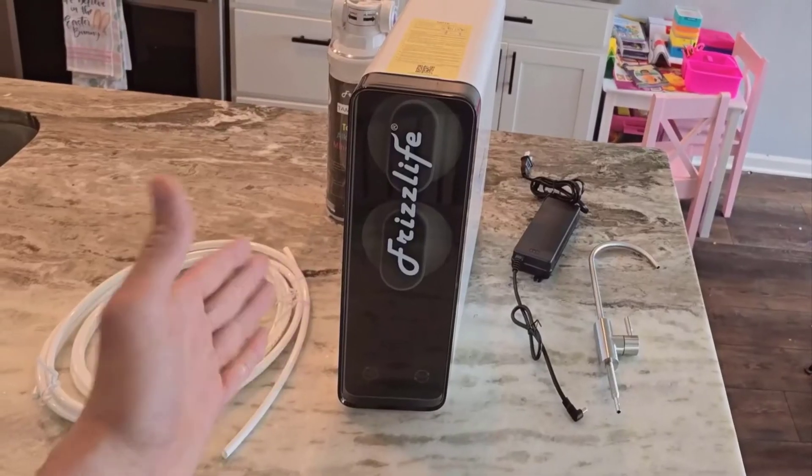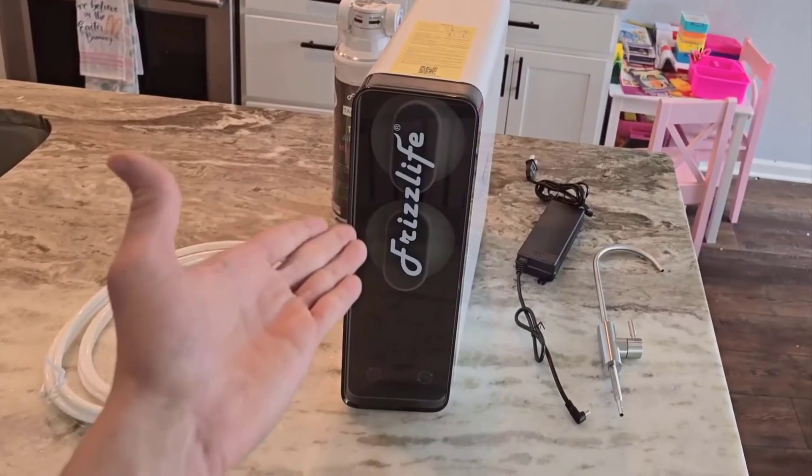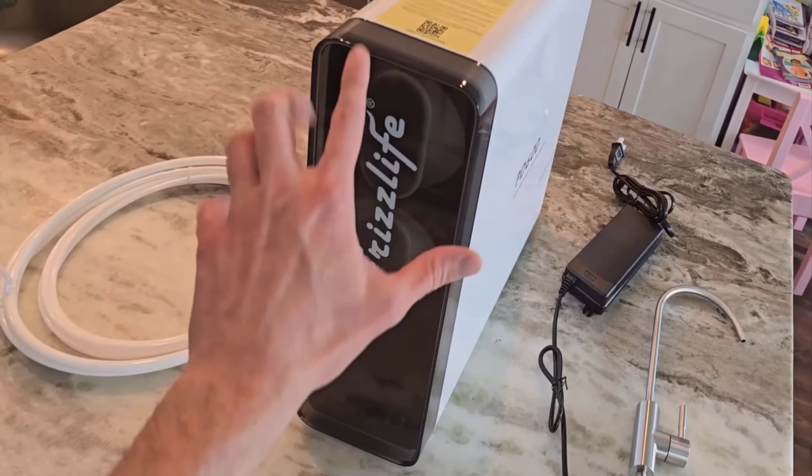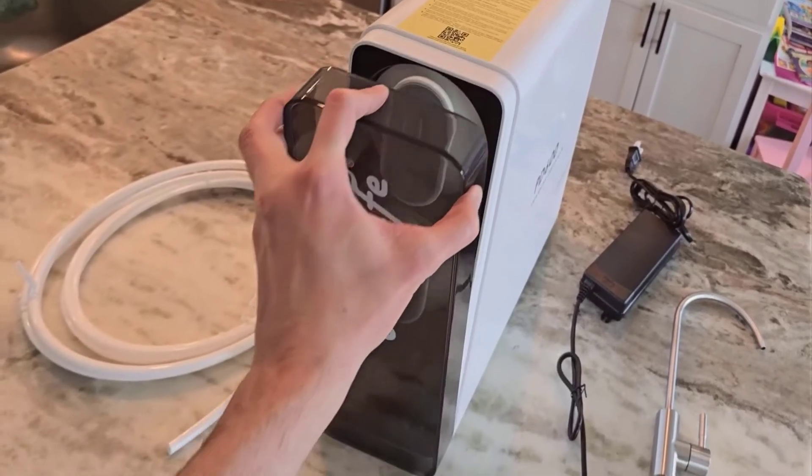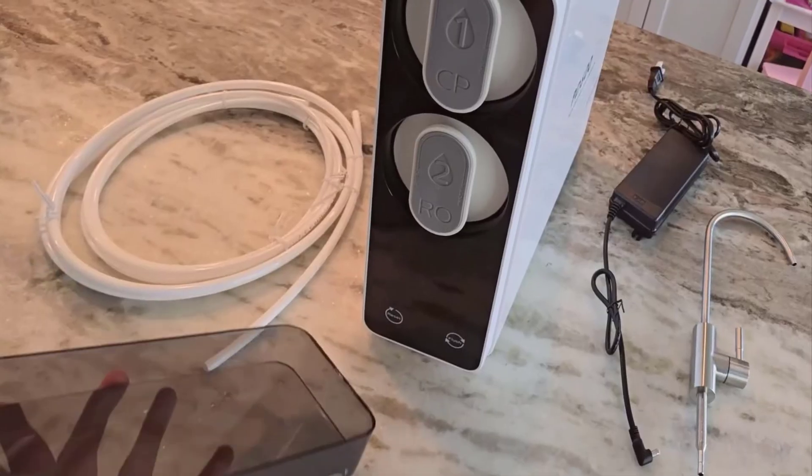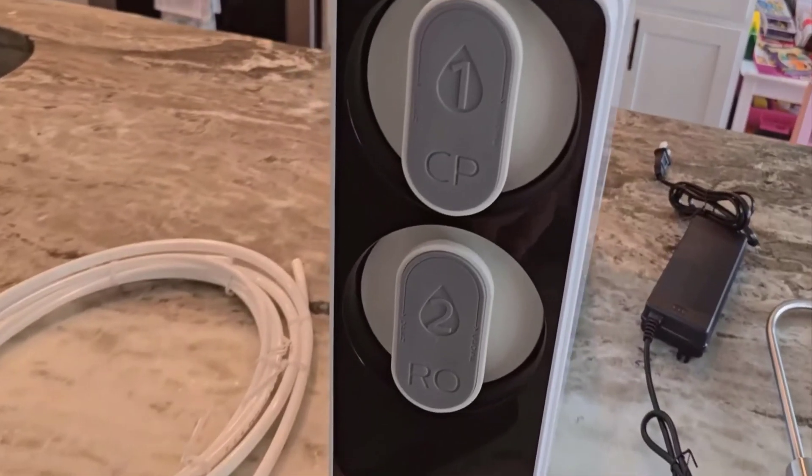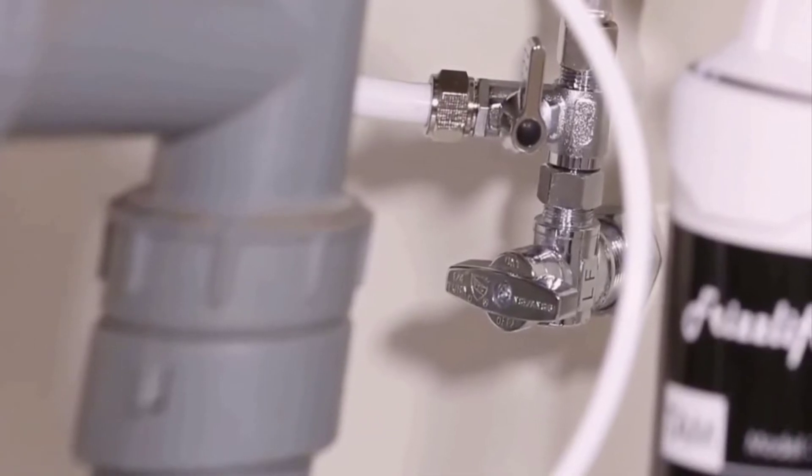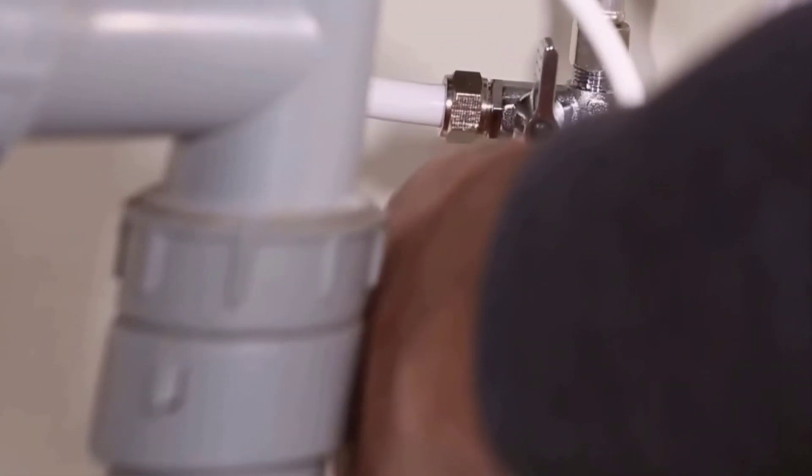If you're like me and appreciate efficiency, you'll love the 600 GPD high flow rate. Imagine getting a full glass of water in just about 10 seconds. No more waiting around for your water to trickle out. This high flow rate ensures you have instant access to fresh, purified water whenever you need it. It's perfect for busy households where every second counts.